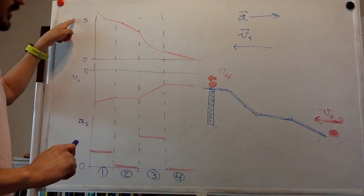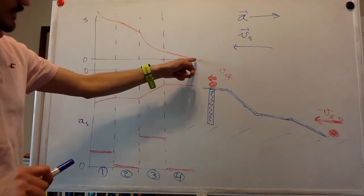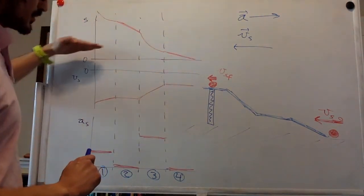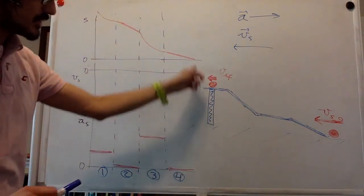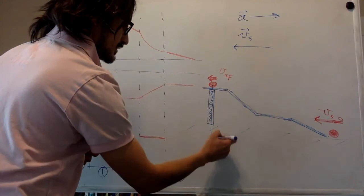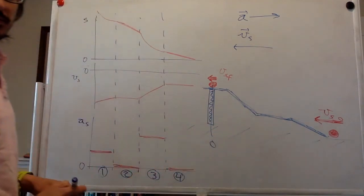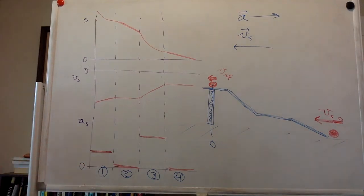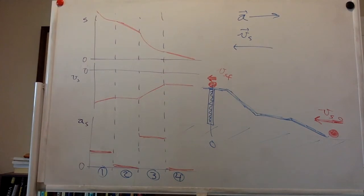And it touches zero, the position, at the end of segment four. So then this means that this is the origin. I think that accounts for everything that we are told in these graphs.